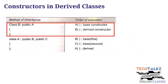For example, class B colon public A — if A is the base class, then the derived class is class B. When a derived class B object is created, the order of execution is: first the base class constructor executes, then the derived class constructor.